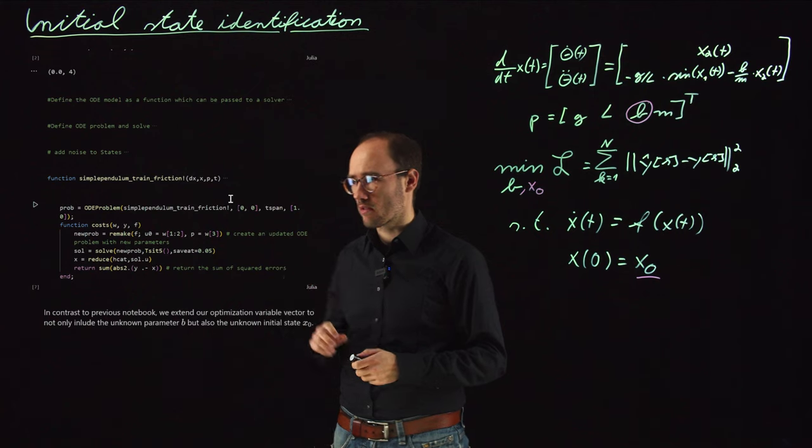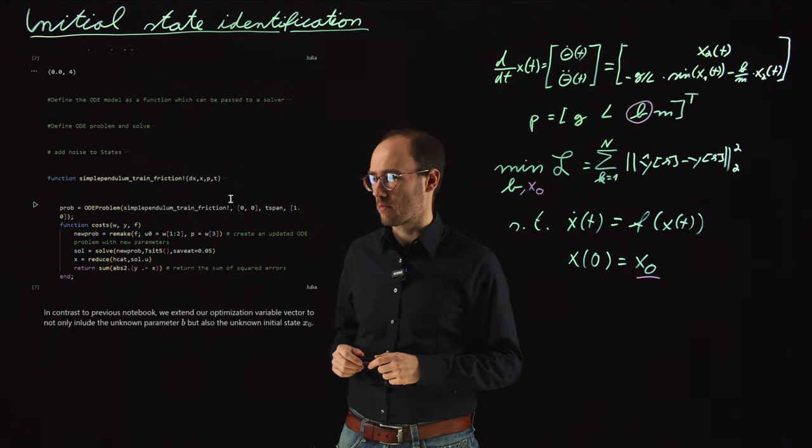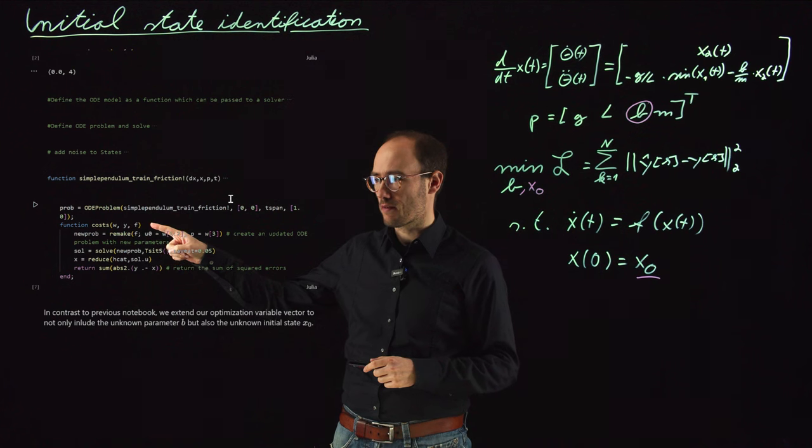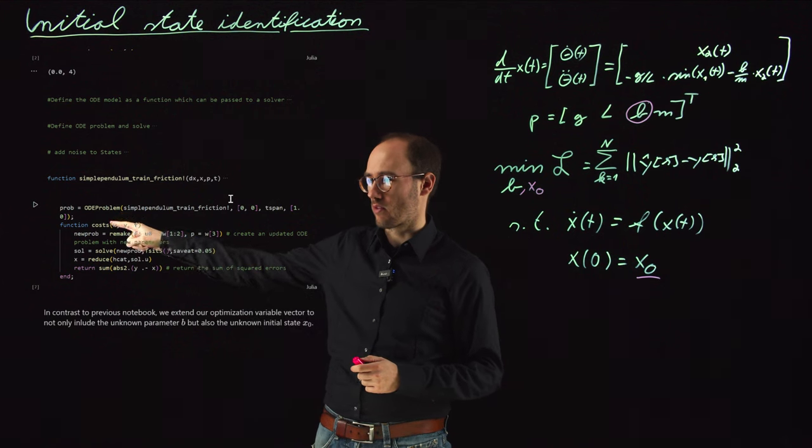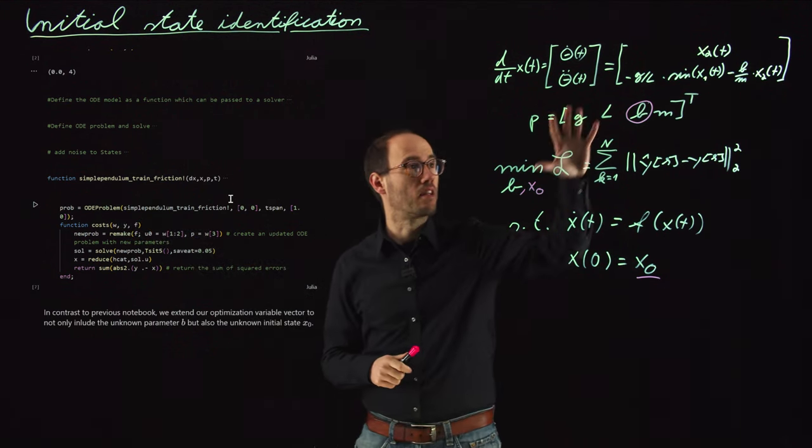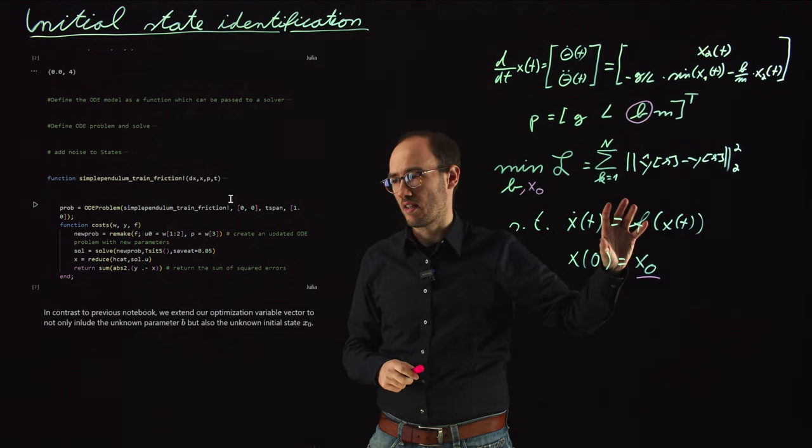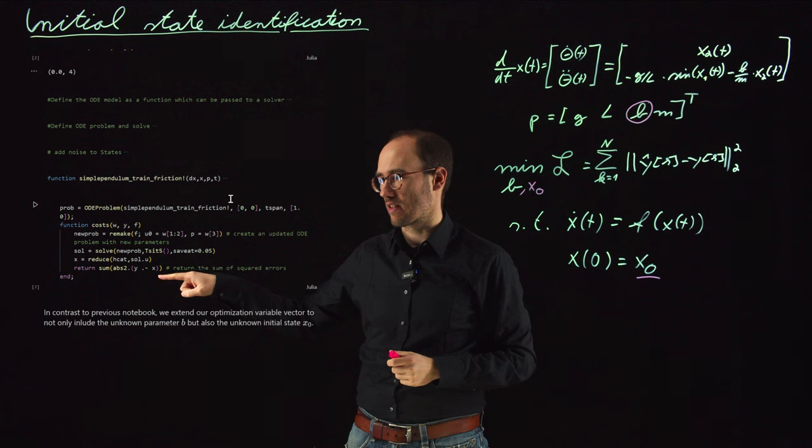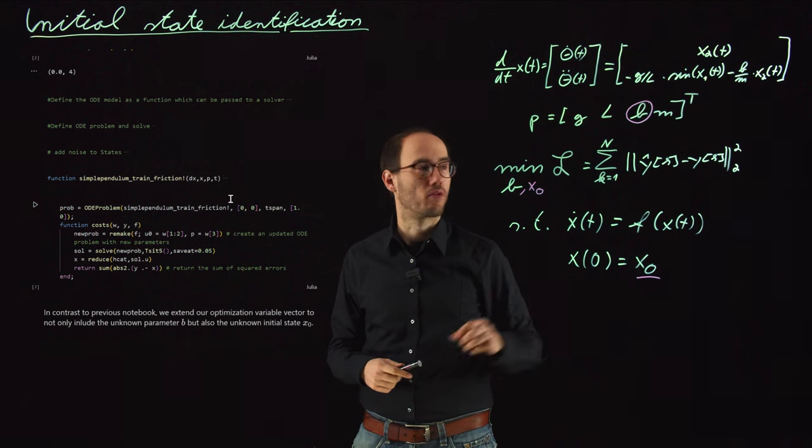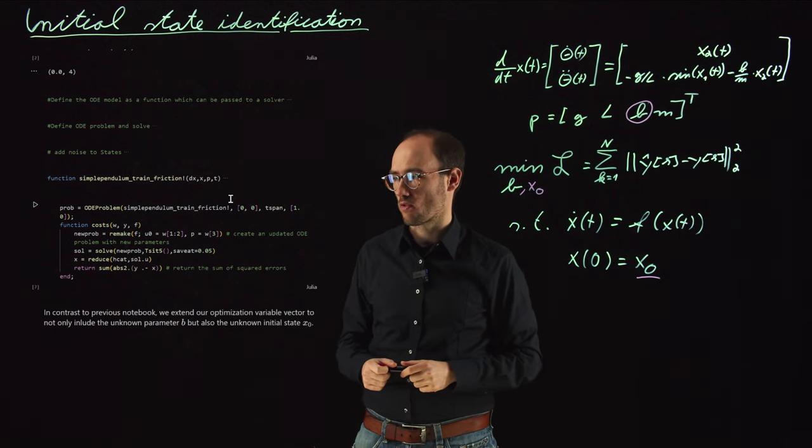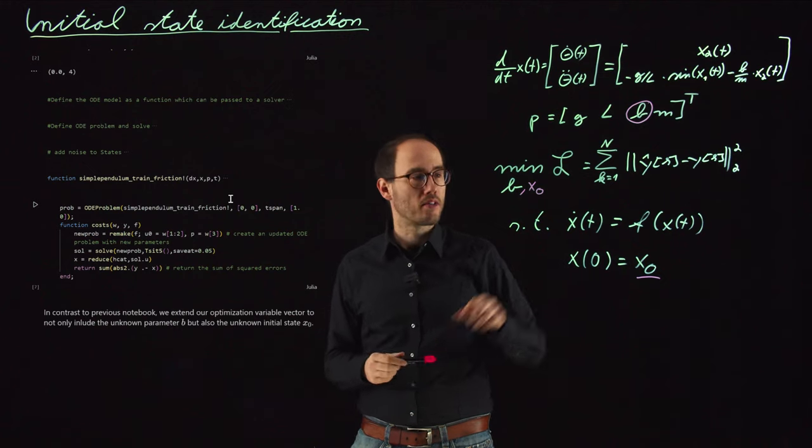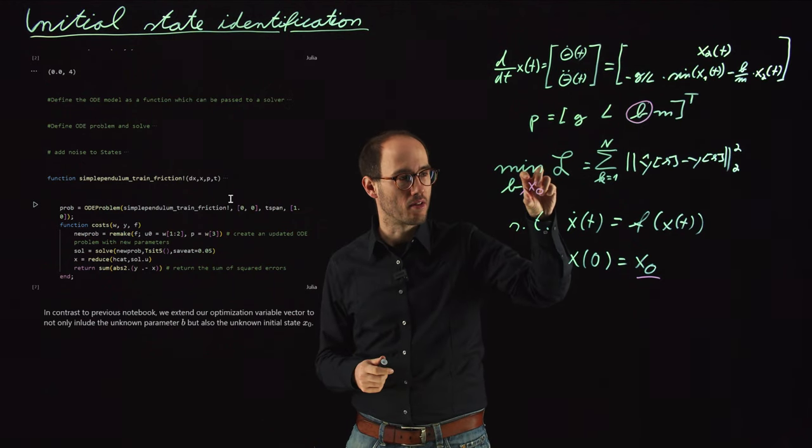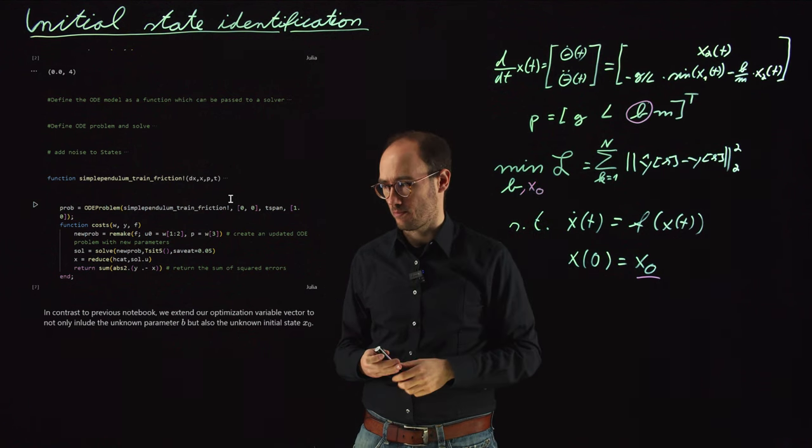So you should remember this code snippet from the previous video where we have basically made our cost function. This cost function was subject to an ODE problem. So this problem definition what we have right here is basically the problem definition of the ODE part here of the cost function and then we basically just get this classical squared loss of the estimated and the true ground truth data in this cost function as shown here on the right-hand side. And now what we basically need to do to also estimate the initial state considering that this initial state is unknown to us in the real world in the data.